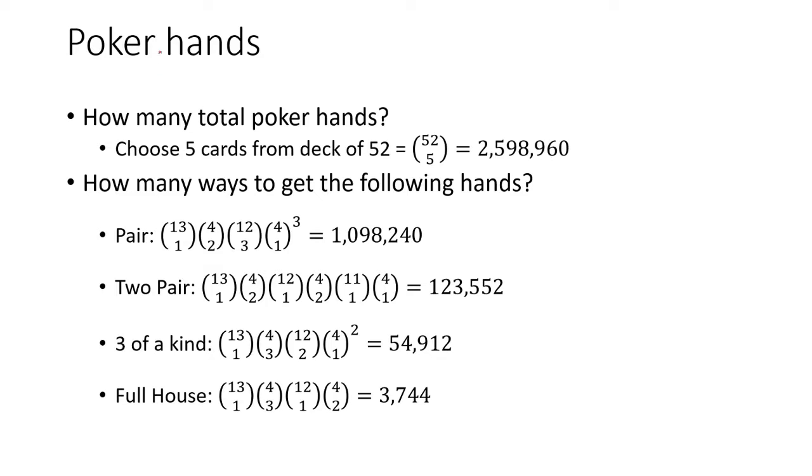Next will be poker hands. We're going to compute a number of different poker hands. So first we're going to compute the total number of poker hands. And the way poker works is you choose 5 cards from a deck of 52. That's simply 52 choose 5. And that's around 2.6 million.